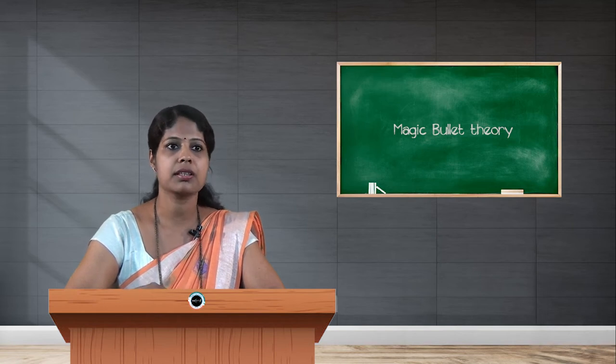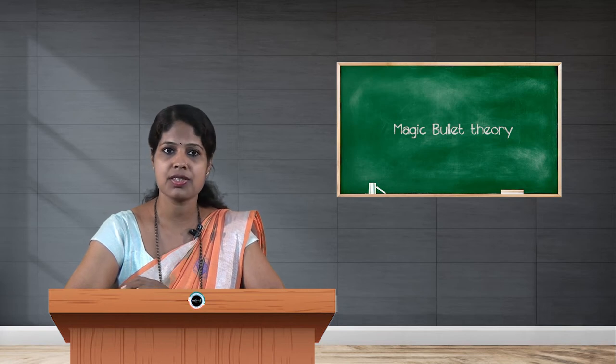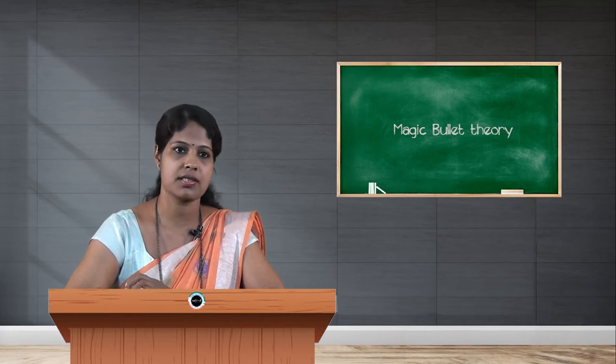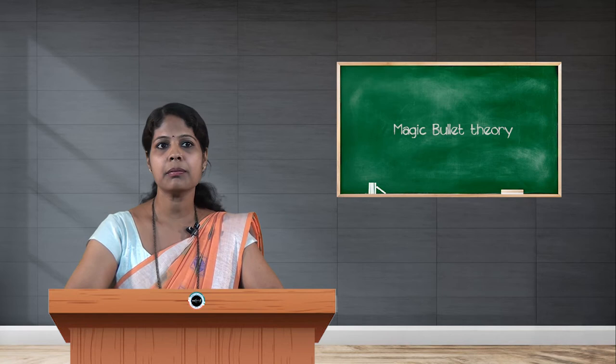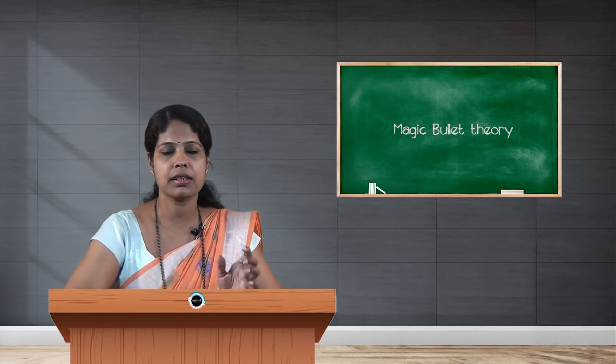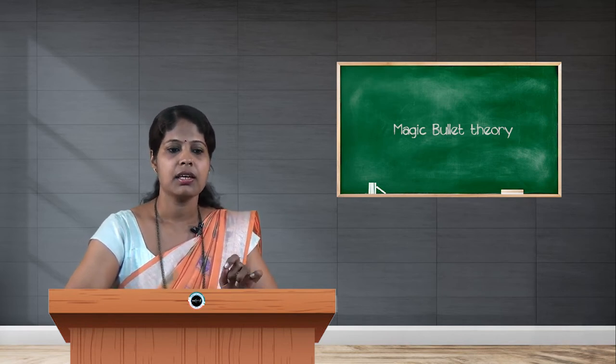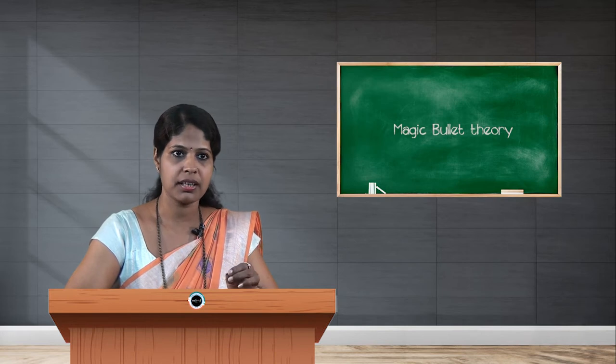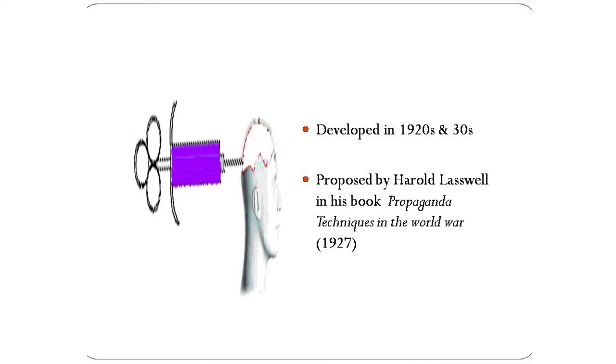So now let us look into what is Magic Bullet Theory, what it says, and what are its features, assumptions, and limitations. Basically, Magic Bullet Theory or Hypodermic Needle Theory presumes that media is powerful and strong and has direct and immediate impact on people. The theory was developed in the 1920s and 30s and was proposed by Harold Lasswell in his book Propaganda Techniques in the World War, published in 1927.